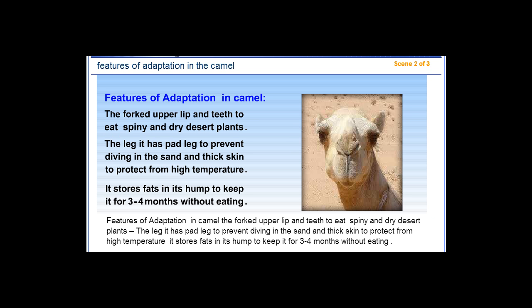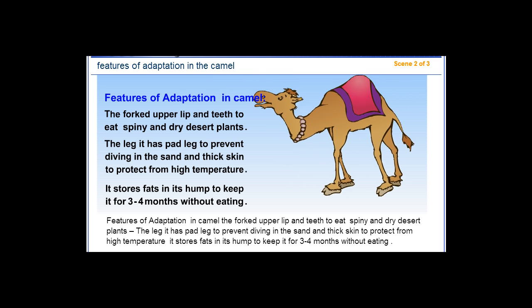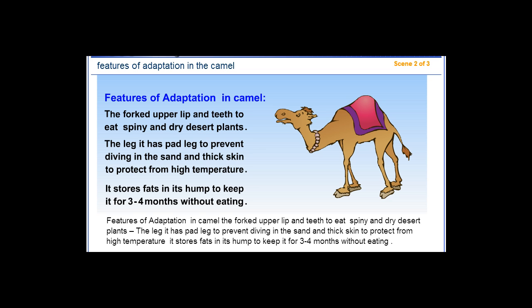Features of adaptation in camel: The forked upper lip and teeth allow it to eat spiny and dry desert plants. The leg has a padded sole to prevent sinking in the sand and thick skin to protect from high temperature.